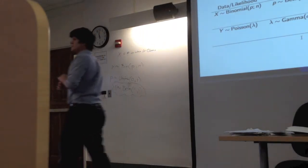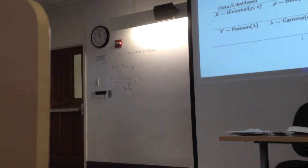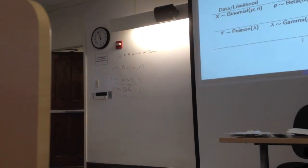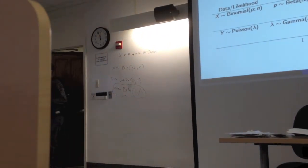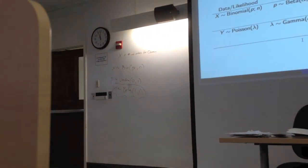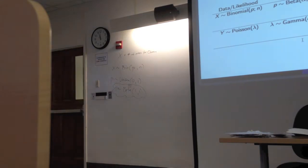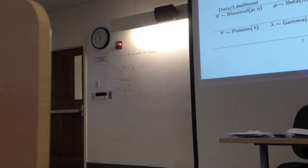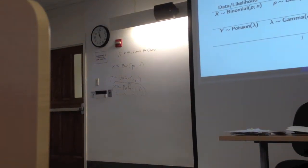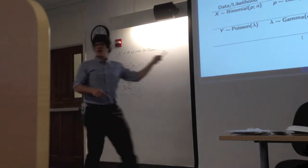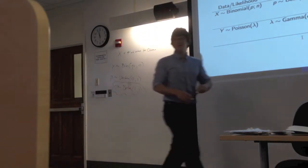You could just write Beta(547, 780) — if it's right you get all the credit. But if you want partial credit, show at least all this work. The more work you show, the easier it is to assign partial credit. At minimum, show the last line with how you updated the parameters.